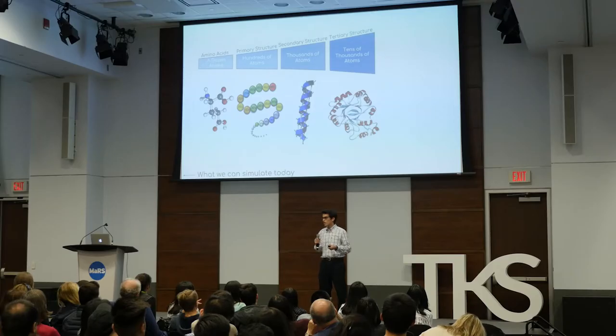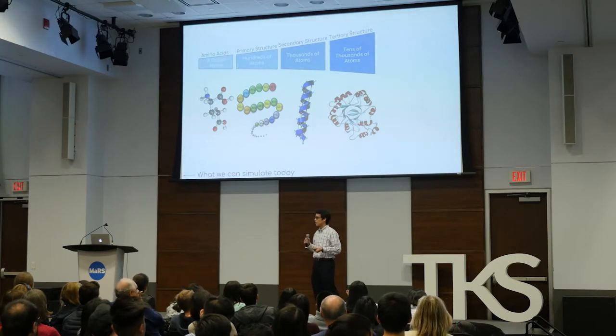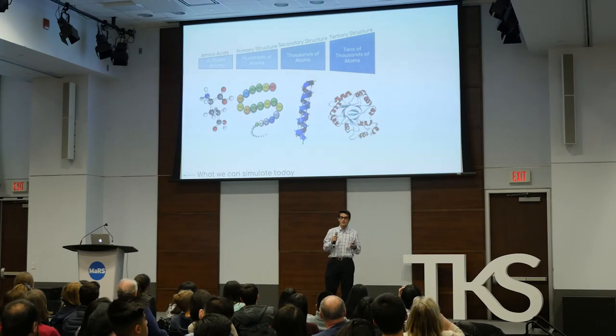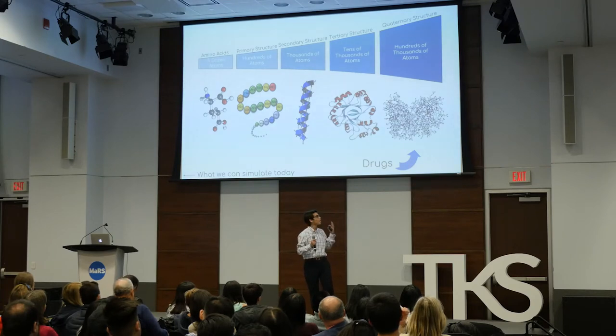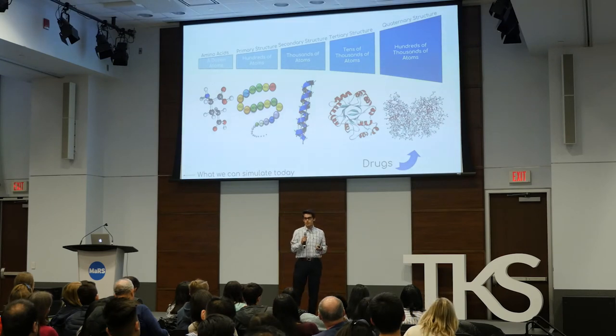The tertiary structure is one step before a full protein, made of about a dozen or so secondary structures — so we're literally looking at tens of thousands of atoms. This is tens of thousands of times more complicated than the helium hydride molecule we simulated a couple weeks ago. And finally the quaternary structure is composed of hundreds of thousands of atoms — incomprehensible in complexity — yet somehow these are the fundamentals of what make up our drugs today.